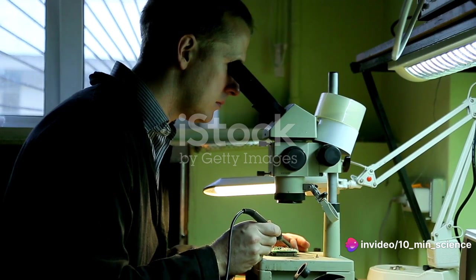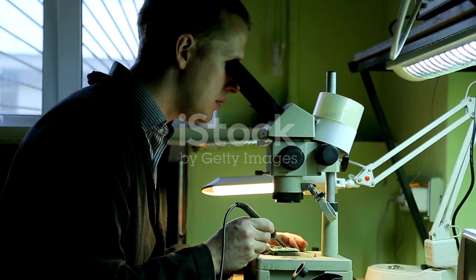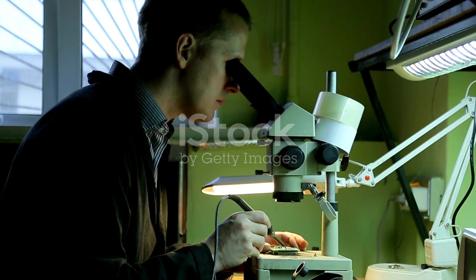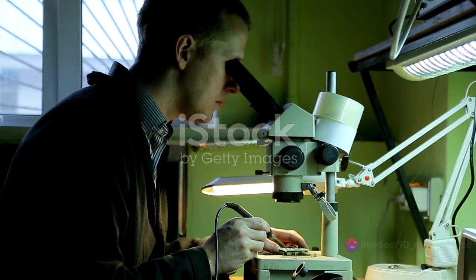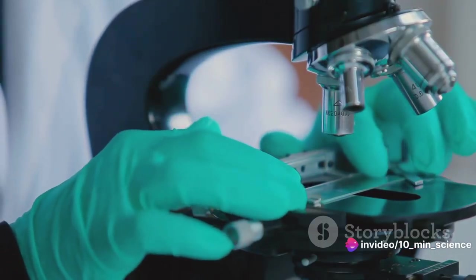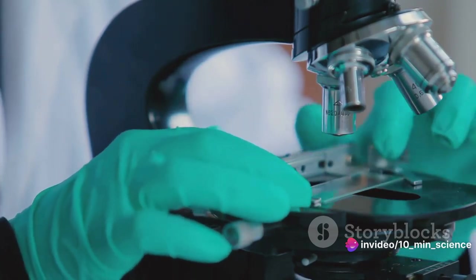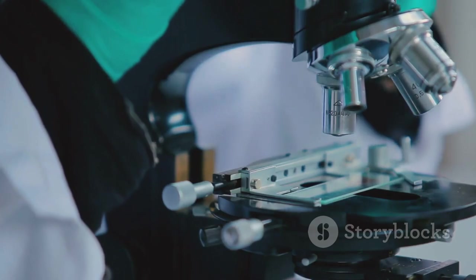What about storage? Microscopes should be stored in a dry, dust-free environment. Cover your microscope with a dust cover when not in use. This prevents dust and other particles from settling on the lenses and other parts. And when it comes to usage, always start on the lowest power objective, then increase magnification as needed. This helps prevent damage to the slide and the lens.